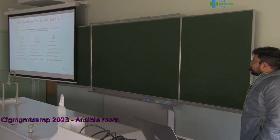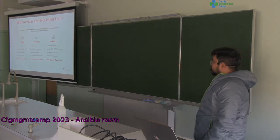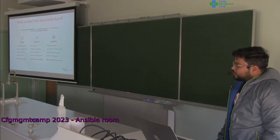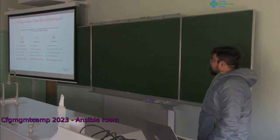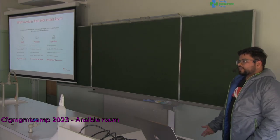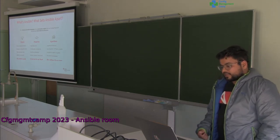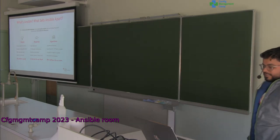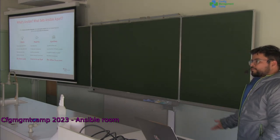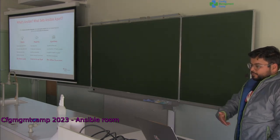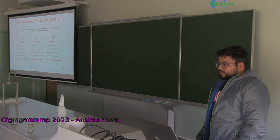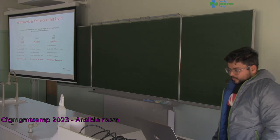So what is Ansible and what sets it apart? It's been around for 11 years. It's a simple automation language and automation engine that runs Ansible playbooks, providing automation for everyone. What sets Ansible apart is that it is simple, powerful, and agentless. It's simple because it uses human-readable information, no special coding skills are needed, and you use playbooks to automate tasks executed in order.